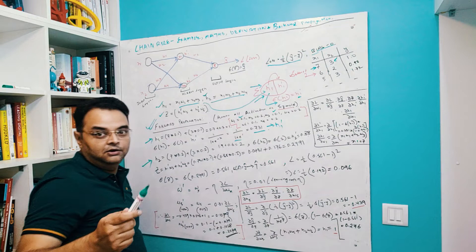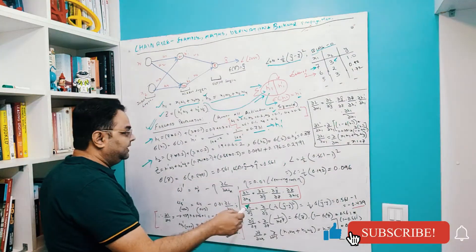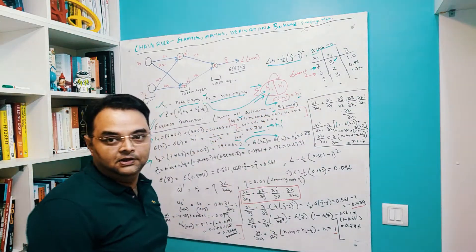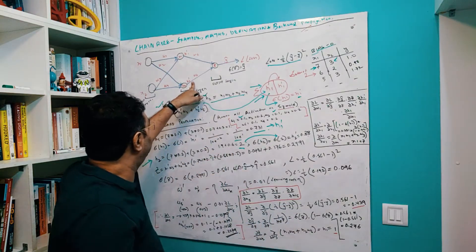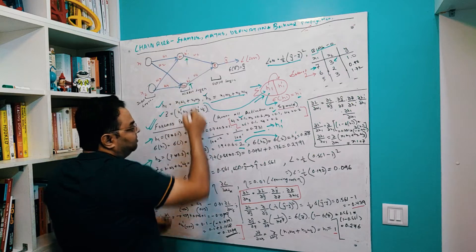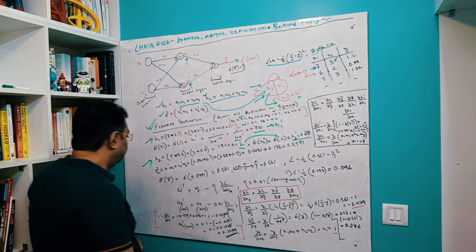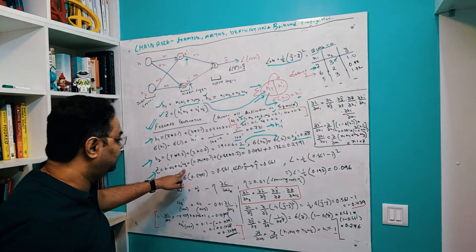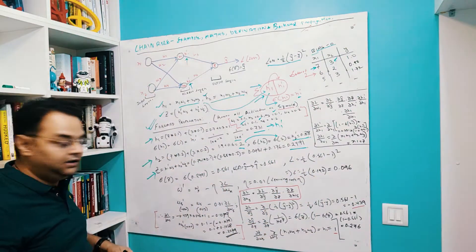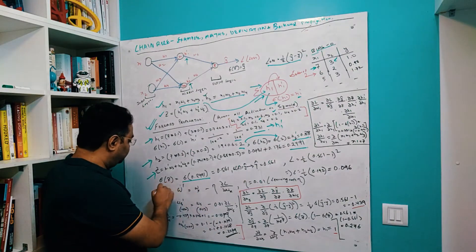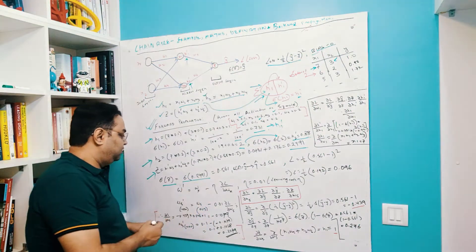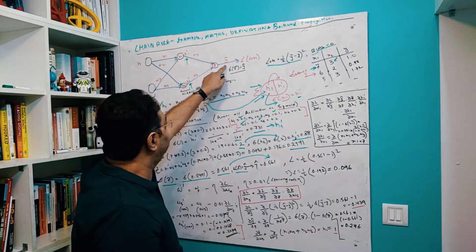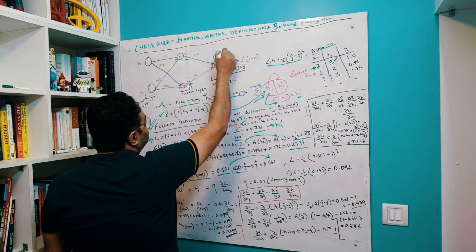We propagate one row at a time. With h1-prime and h2-prime computed, we calculate z = h1-prime·w5 + h2-prime·w6, which gives z ≈ 0.2491. Applying the sigmoid transformation to z gives y-hat = 0.561. This is the predicted output from the network.